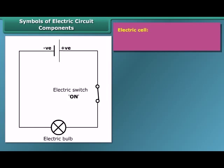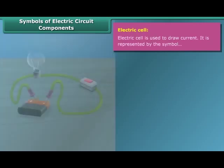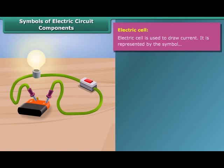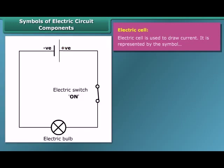An electric cell is a simple device which is used to generate electricity. Electricity is produced by chemical reaction. It has a positive terminal and a negative terminal. In the symbol of the electric cell, the longer line represents the positive terminal, and the thicker, shorter line represents the negative terminal.